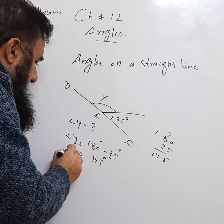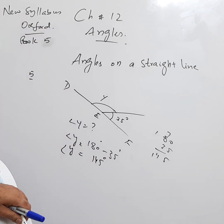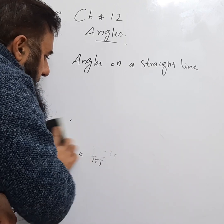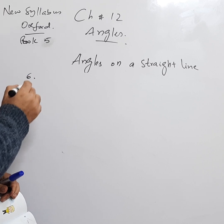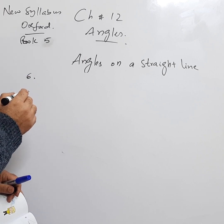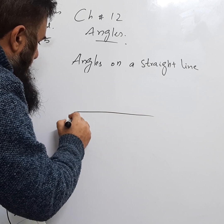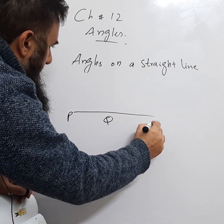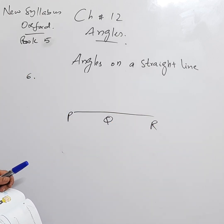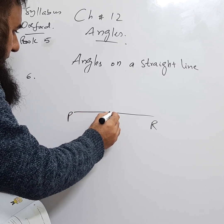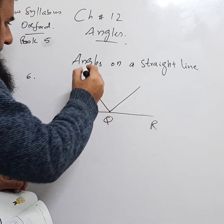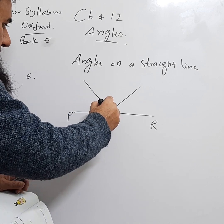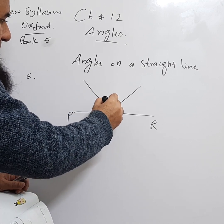Angle y is equal to 145°. That is the answer. Example number six on page 241: PQR is a straight line. Find angle z — Q is the vertex. They have already given this diagram.